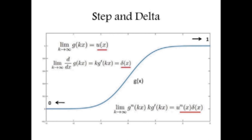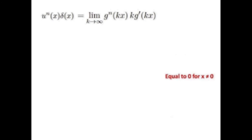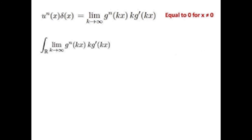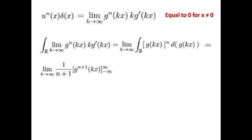By multiplying these two limits we get a limit that gives the product of a step function raised to the power n times a delta function. The rest is simple calculus: we see that the limit goes to 0 for every x ≠ 0. We evaluate the integral of the limit, which is composed of two terms, the second being the derivative of the argument of the first. The integral is constant, independent from k, so we can drop the limit since the limit of a constant sequence is the constant itself, and we see that the integral is finite.